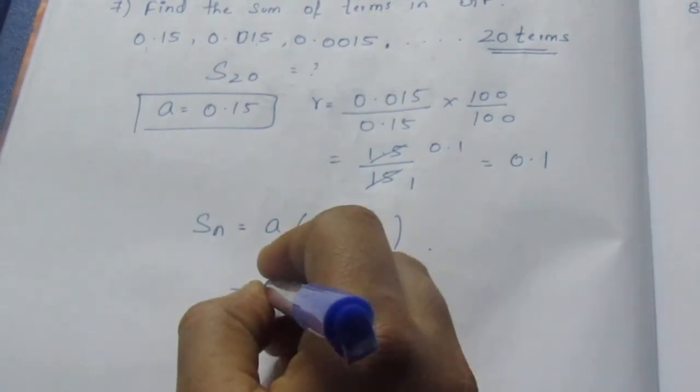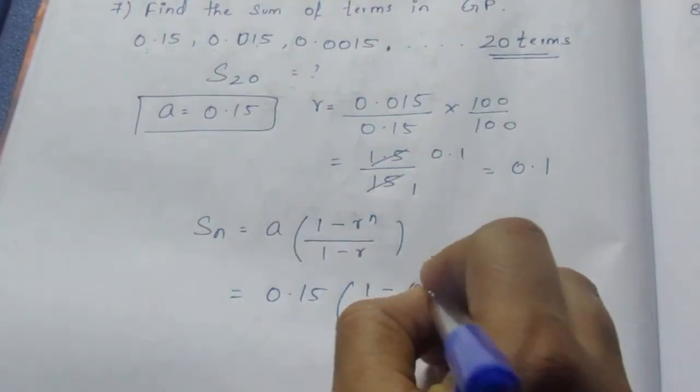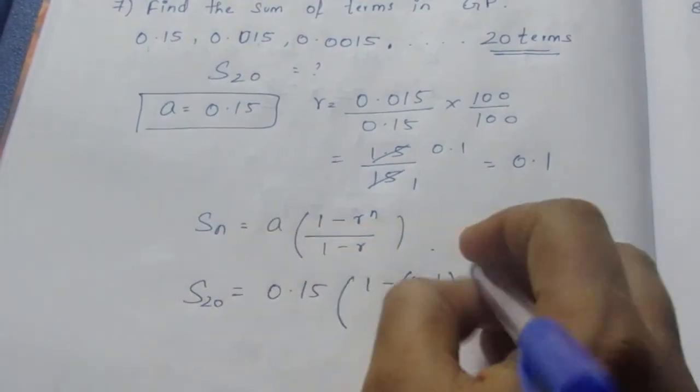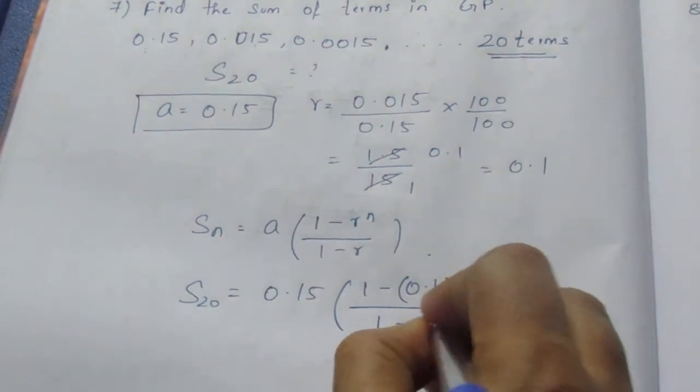A value is 0.15, 1 minus R is 0.1. The whole power N is—here we need to find S20, so 20—by 1 minus 0.1. Now here it becomes 0.15 by 0.9.